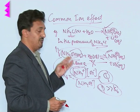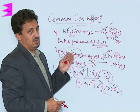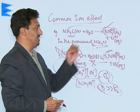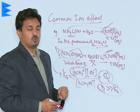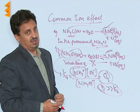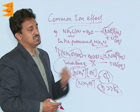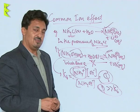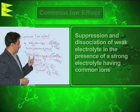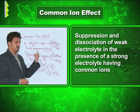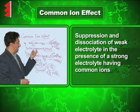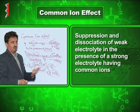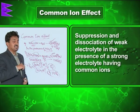The dissociation of the weak base gets reduced due to the presence of common ions from a strong electrolyte. This is called the common ion effect. The suppression of dissociation of a weak electrolyte in the presence of a strong electrolyte having common ions is called the common ion effect.